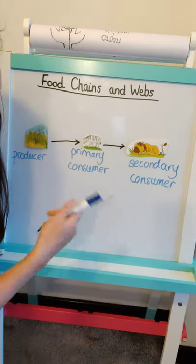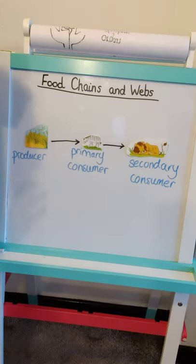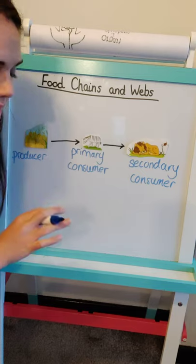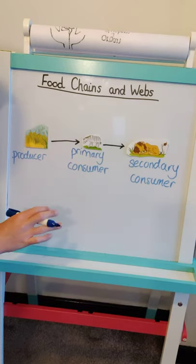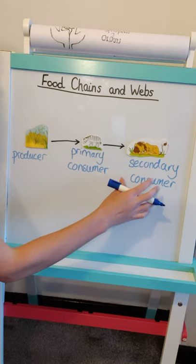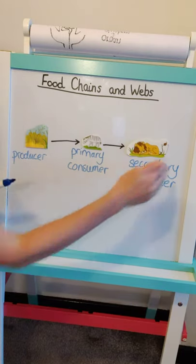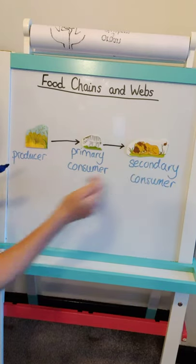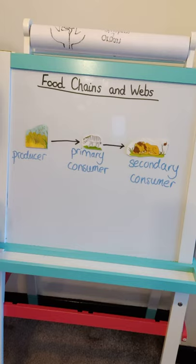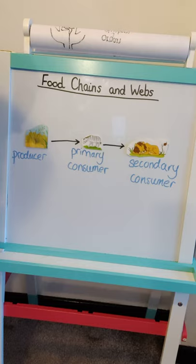Nothing eats a lion — nothing will chase and kill and catch a lion to eat it. So as well as being the secondary consumer, the lion in this case is also called the top consumer. There's nothing eating the lion after that point. So we've got the producer, primary consumer, and secondary consumer.